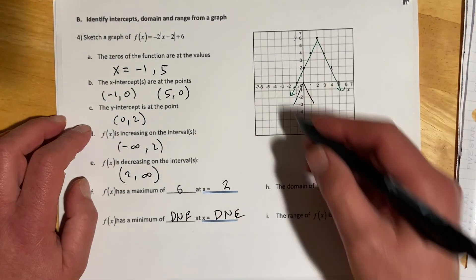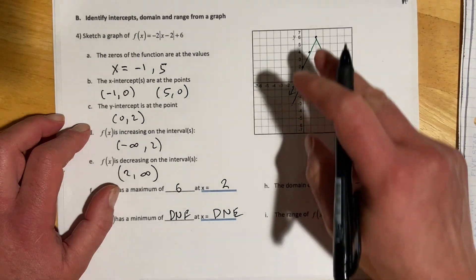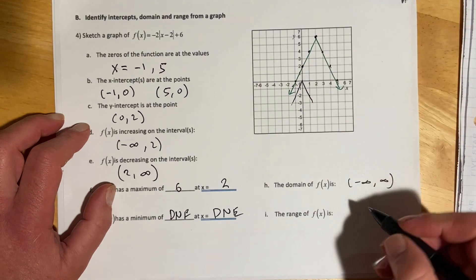The domain for absolute values is all real, so negative infinity to infinity. The range in this case is going to go from negative infinity and then up to and including that 6.